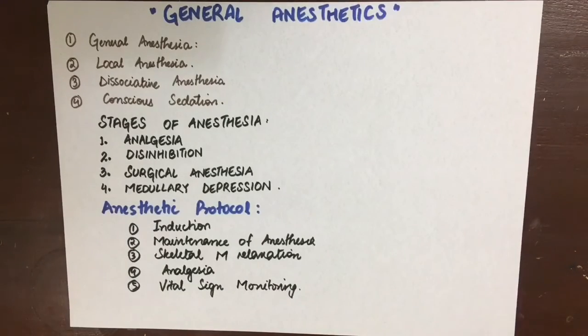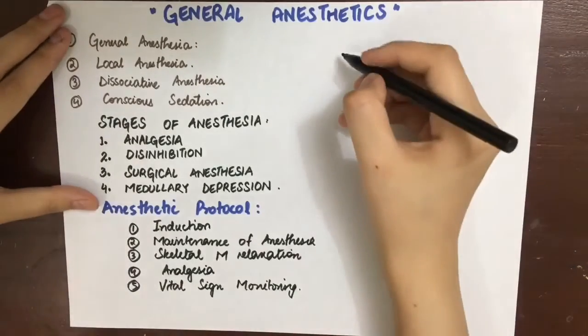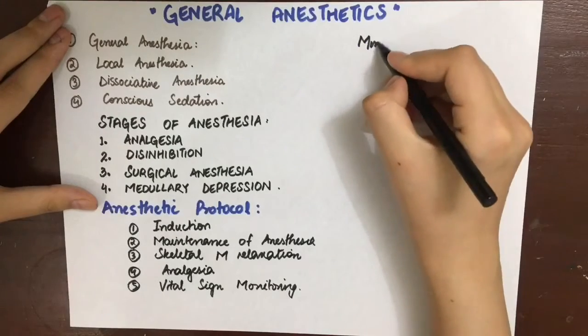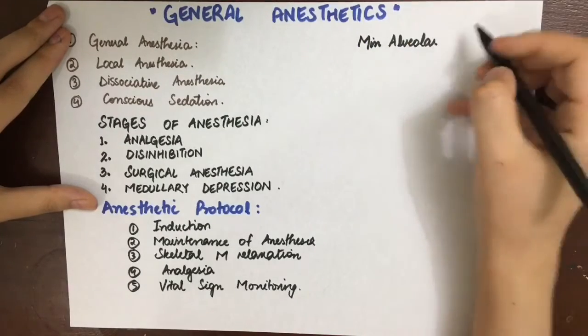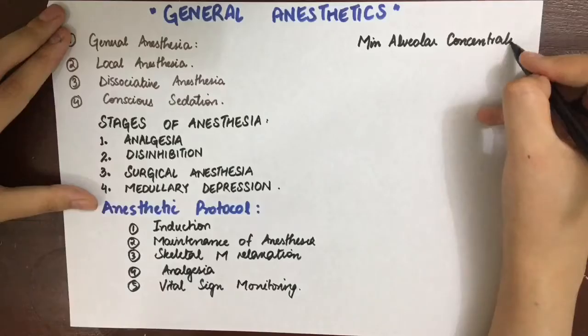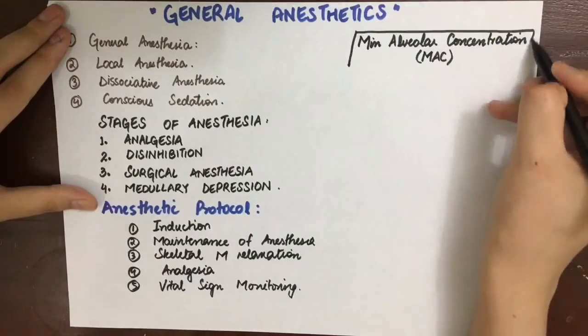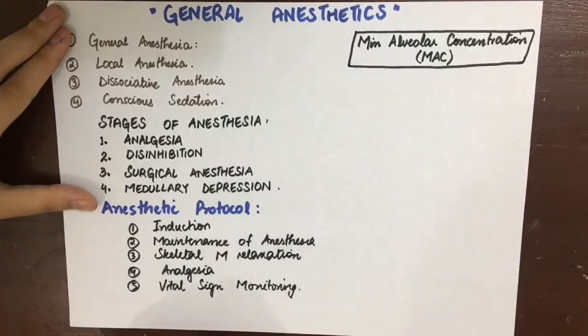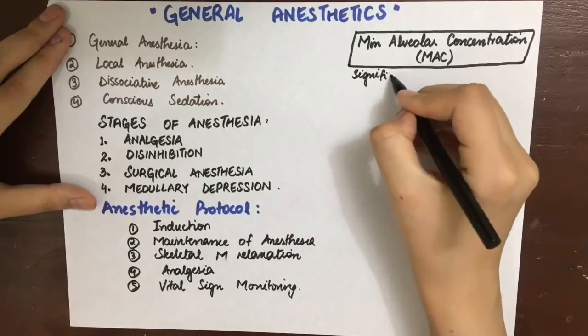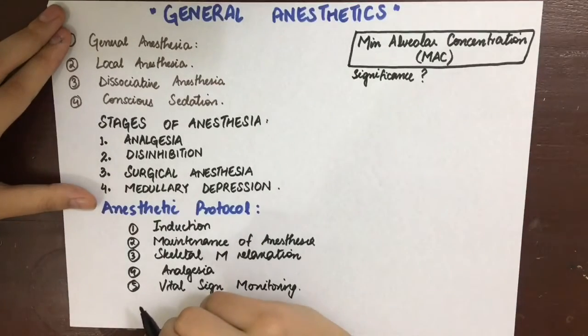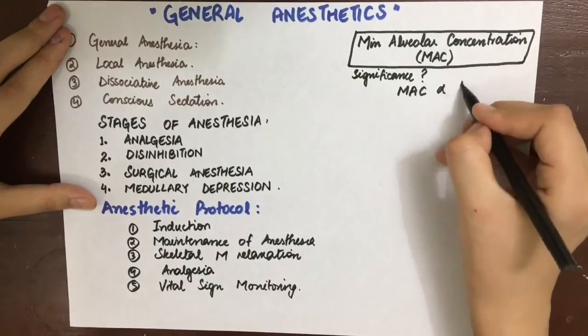Two important concepts before we classify the general anesthetics are minimum alveolar concentration, that is the MAC value of an anesthetic. It is basically the minimum alveolar concentration of any anesthetic that should be there to prevent response to a standardized painful stimulus in 50% of the people.